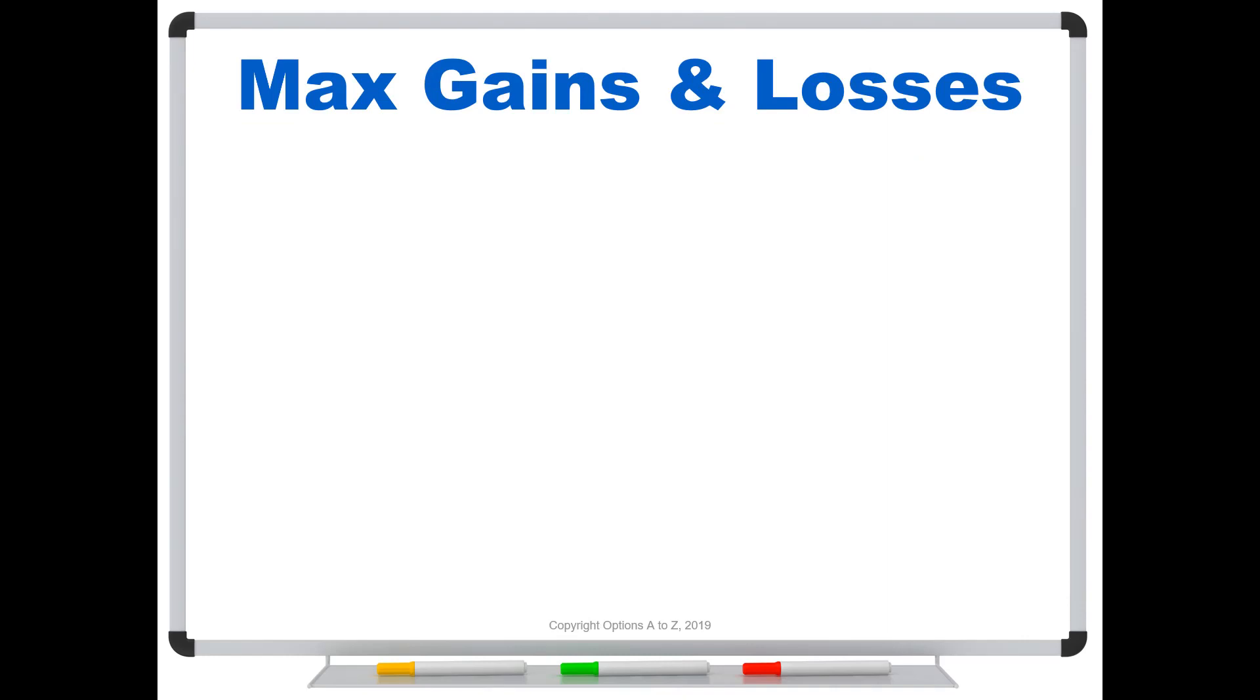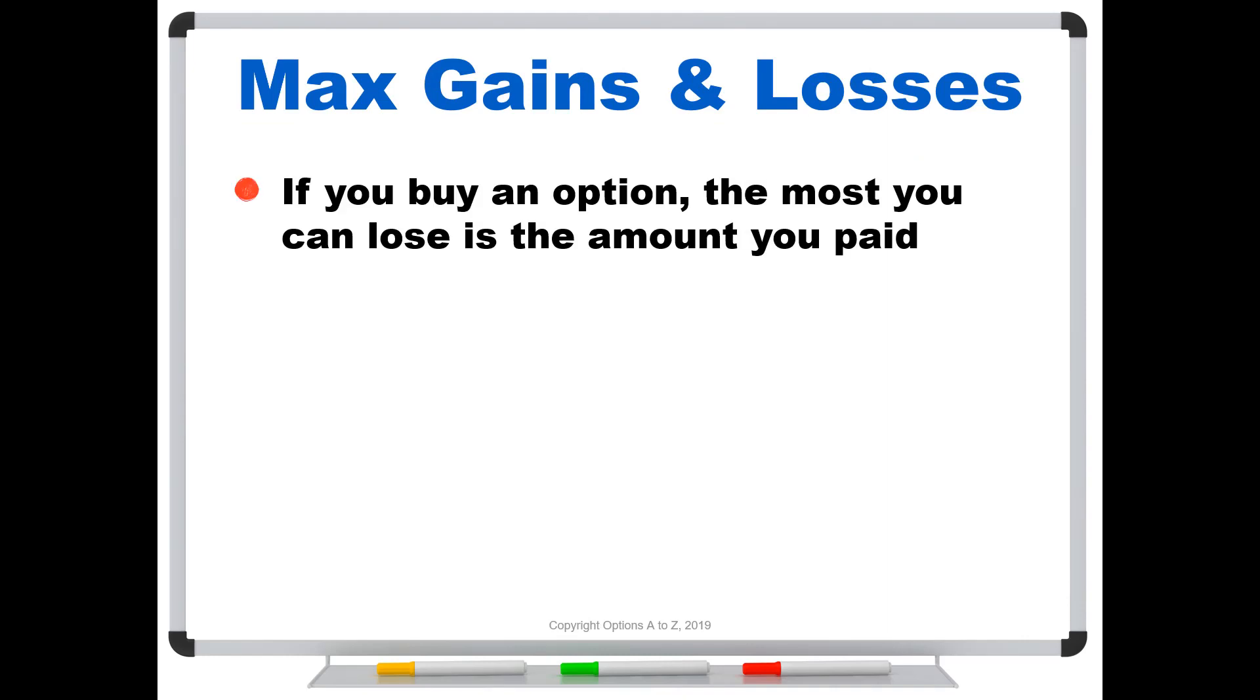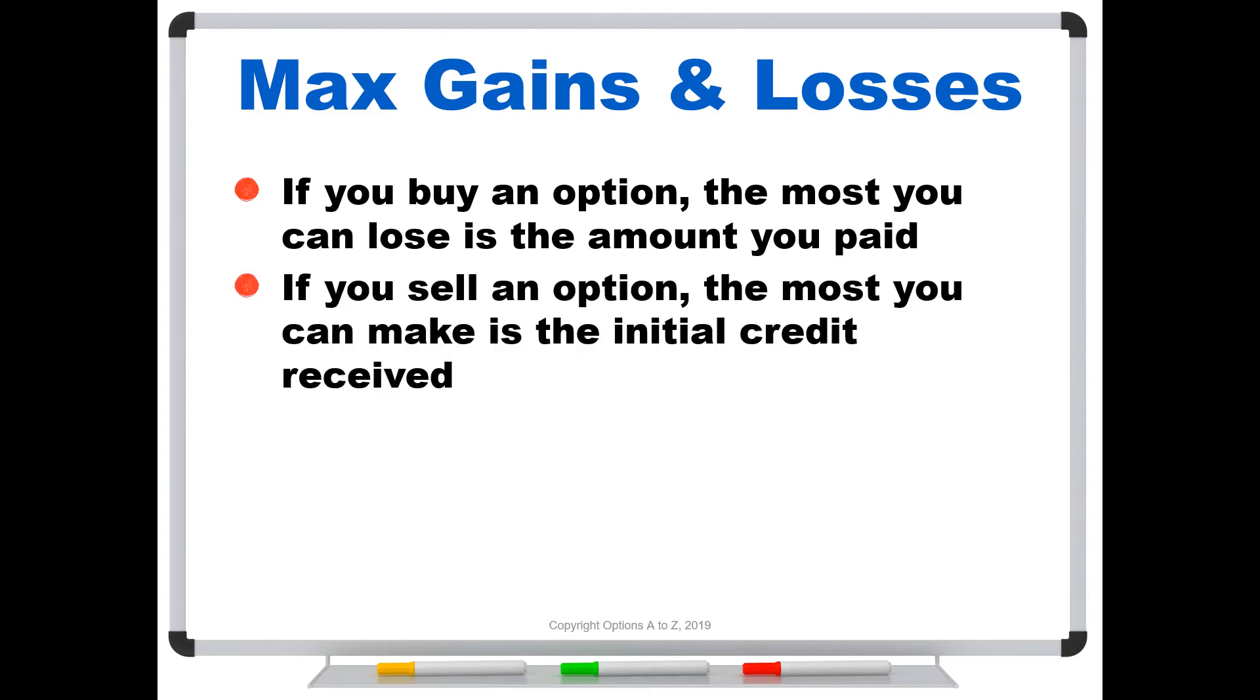The first thing to understand is that if you buy an option, the most you can lose is the amount you paid. That is true whether you buy an individual option, buy a call, buy a put, or if you buy a spread. If you buy a vertical spread, the most you can lose is the amount you paid. If you buy a diagonal spread, the most you can lose is the amount you paid. So that's always important for the debit spreads or the ones that you're going to pay for. On the other hand, if you sell an option, the most you can make is the initial credit that you received.